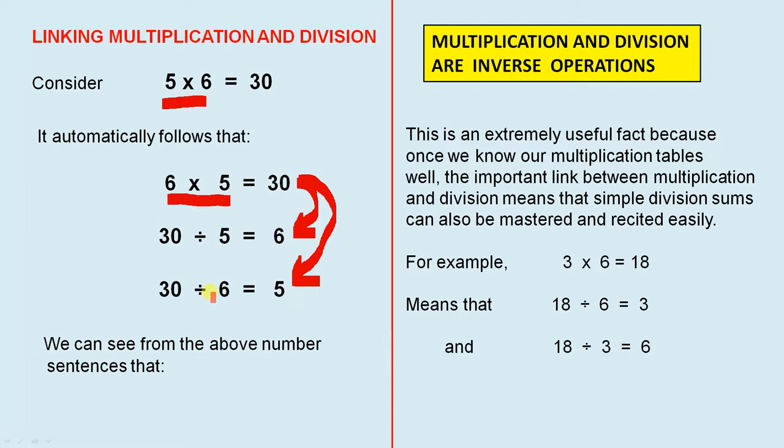That is 6 divided into 30 equals 5. We can see from the above number sentences that multiplication and division are inverse operations. That is a very, very important rule, and we need to remember it for the rest of our mathematical career. This is an extremely useful fact because once we know our multiplication tables well, the important link between multiplication and division means that simple division sums can also be mastered and recited easily.